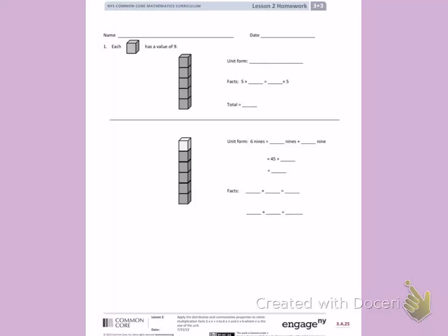This is Module 3, Lesson 2 Homework, The Front. Today's objective was to apply the distributive and commutative properties to relate multiplication facts 5 times n plus n to 6 times n and n times 6, where n is the size of the unit.